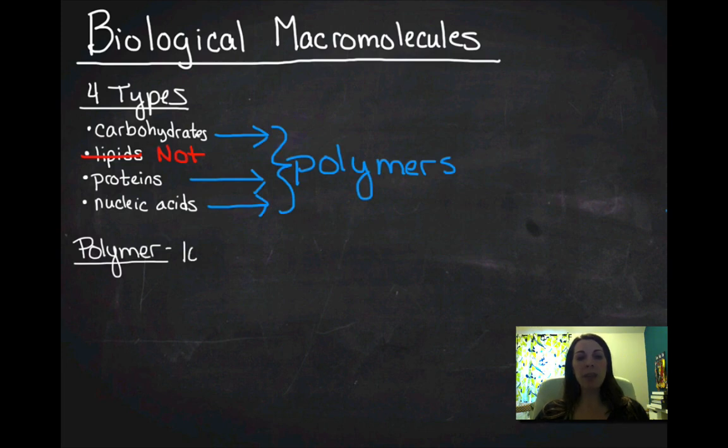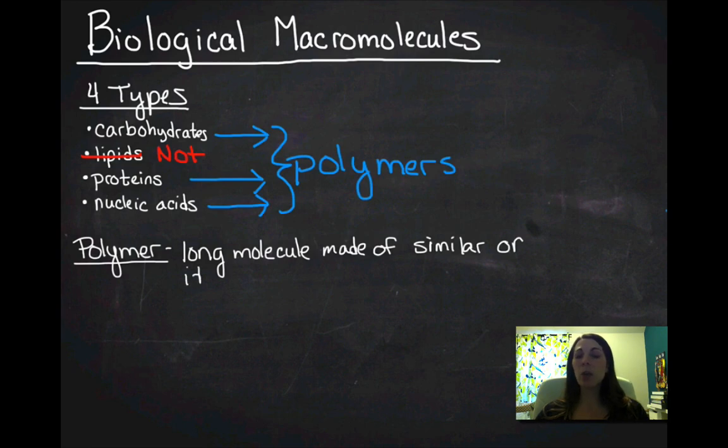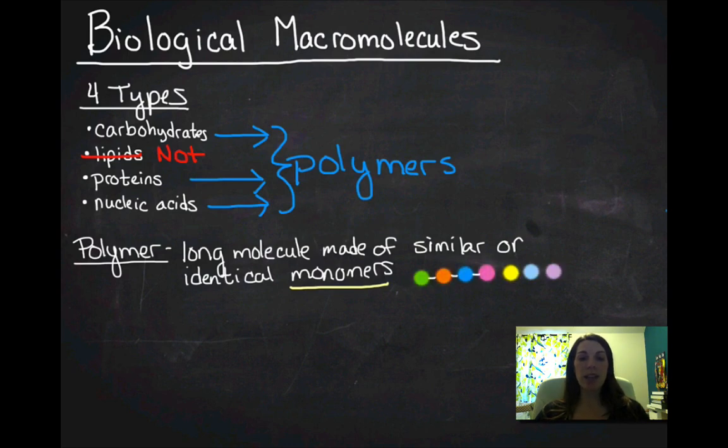So a polymer is simply a long molecule that's made of similar or identical subunits, which we call monomers. So monomer, let's define that. So I've got basically like a string of beads. So if I have a string of beads, the beads can be different colors, they can be different sizes, but they're all strung together in one long chain. And each of those is going to be held together by a covalent bond. And that's pretty important when we're talking about the biological molecules that they're being held together by covalent bonds.